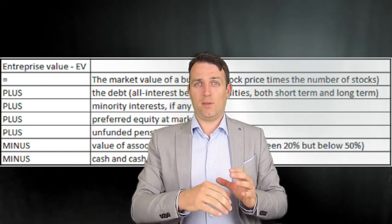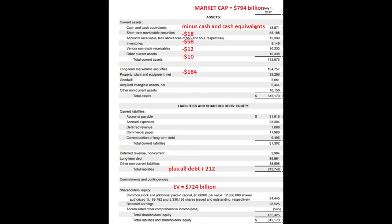So if you want to buy the company free of debt, enterprise value is what you have to pay. You can take out the cash and the value of stocks and similar things that the company owns. A quick example: Apple's market capitalization is $794 billion, minus cash and cash equivalents, accounts receivable, other current assets, minus long-term marketable securities — mostly treasuries in Apple's case — plus all the debts. My calculation gives an enterprise value of $724 billion. What should be included or deducted is very debatable — it's a metric invented by somebody, so these calculations should always be approached in a flexible way.